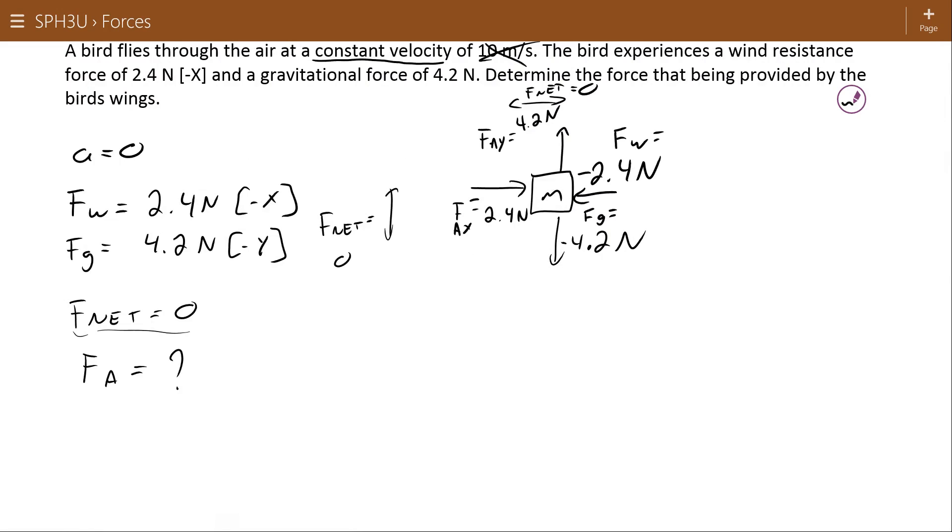Now the back half of this problem is just like when you have two components of things like a displacement. You have to put them back together. This applied force has a component that's going 4.2 Newtons up and 2.4 Newtons over, so we're going to use the Pythagorean theorem to find the angle and the length in this example.